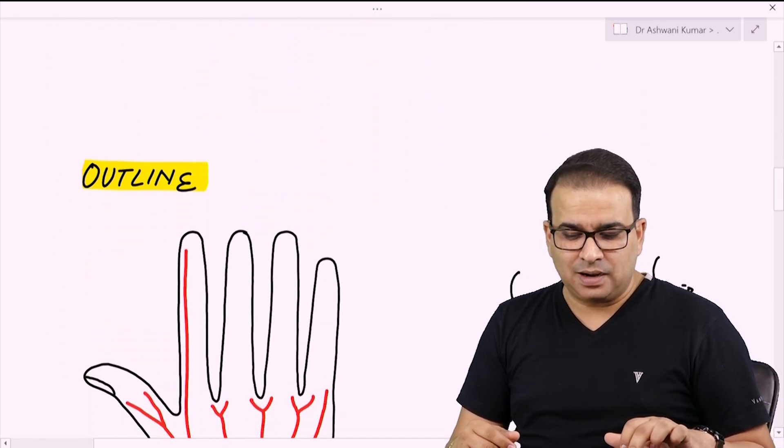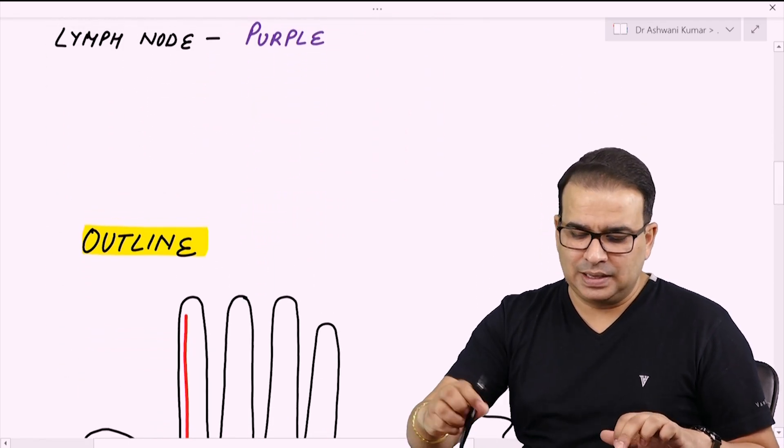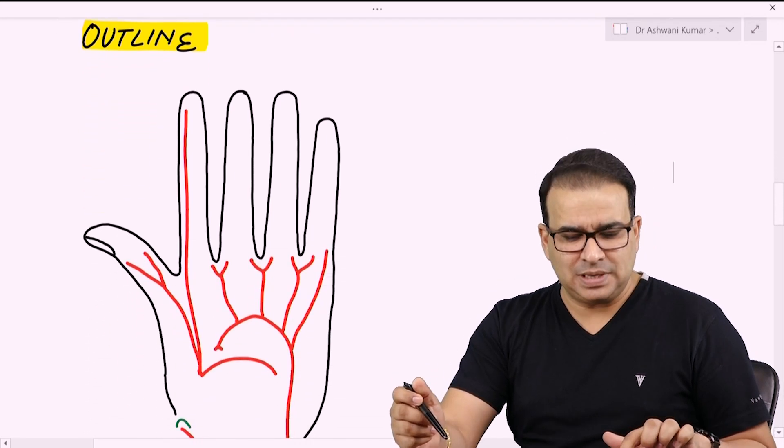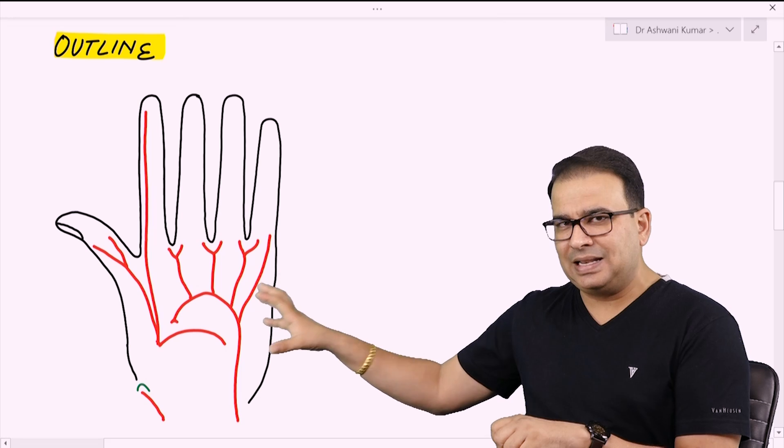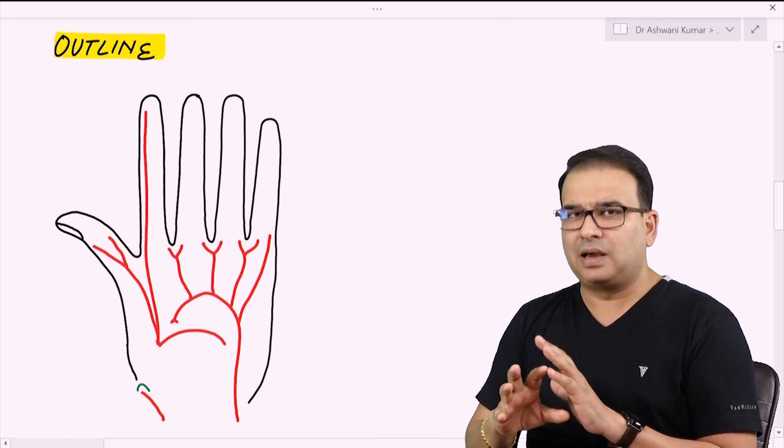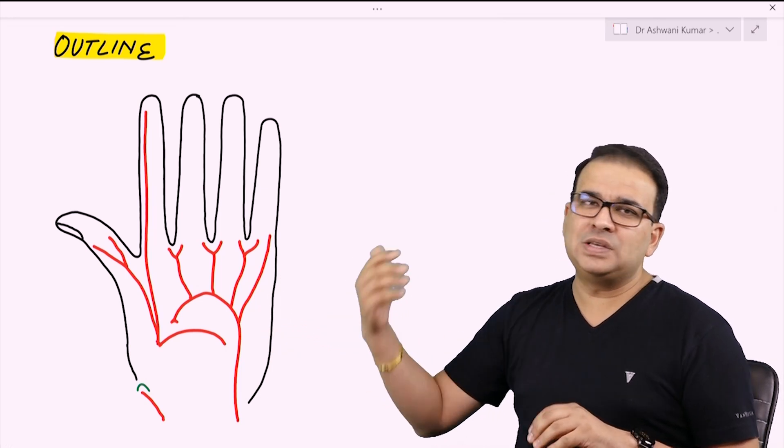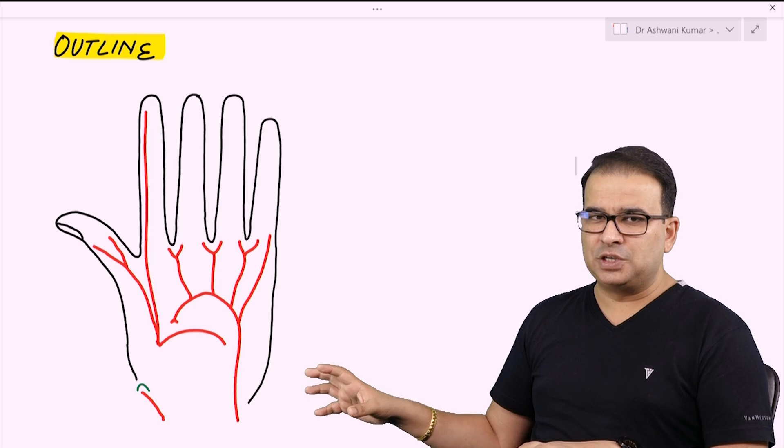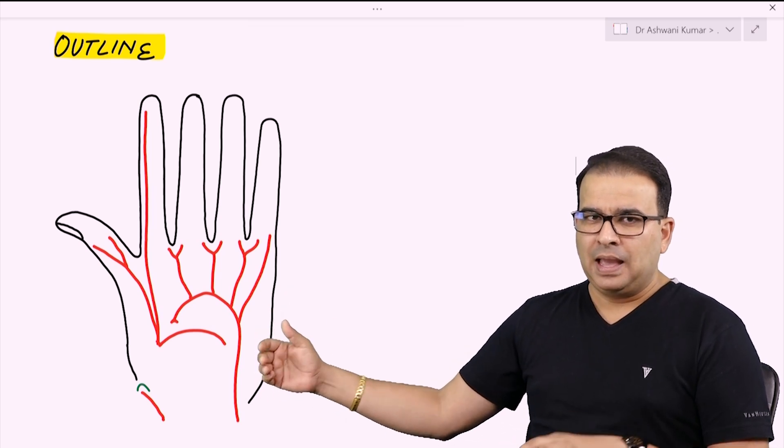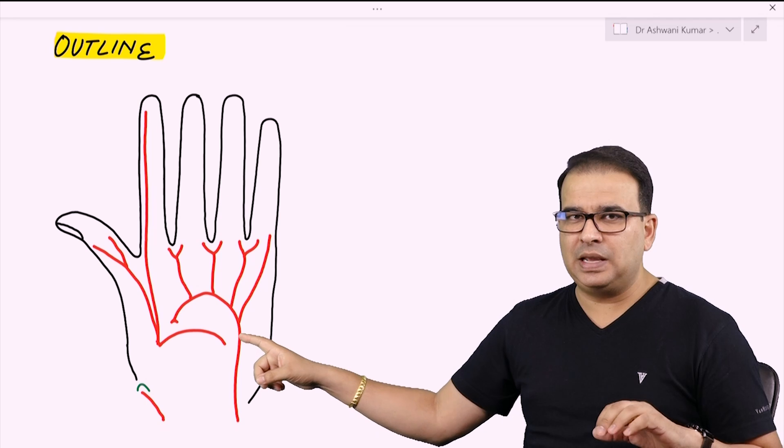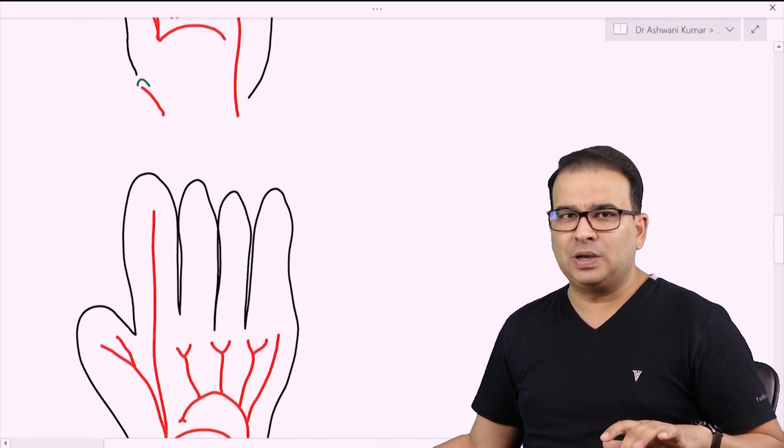Another thing in the diagram which is very important is the outline. Why I am saying outline is important is because maybe the things that you draw inside the diagram are technically correct, but the outline always creates an impression. I drew the arterial arches here, the superficial and deep palmer arch, and exactly the same superficial and deep palmer arch are also in this diagram.